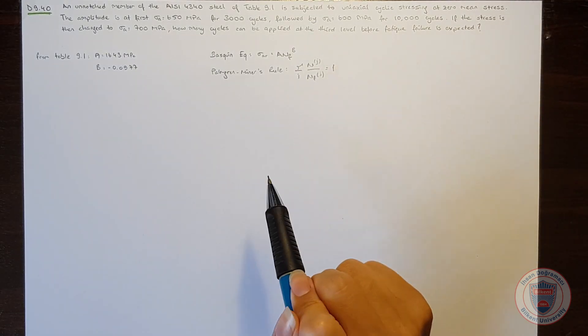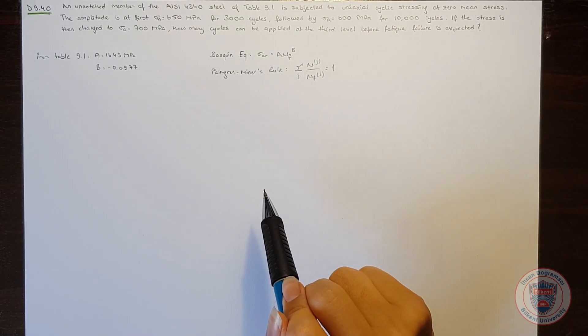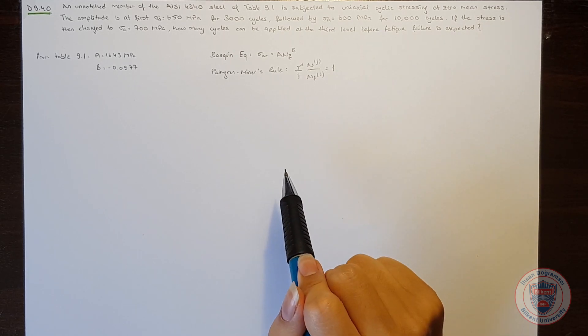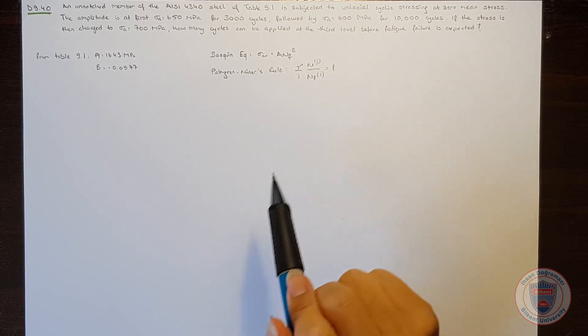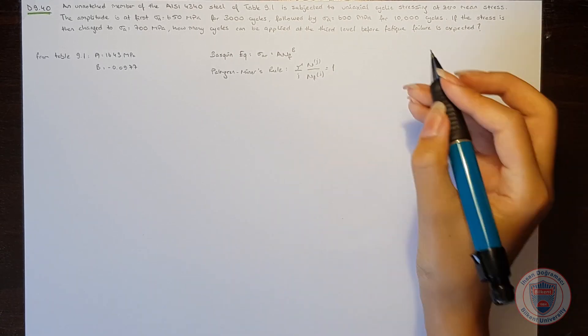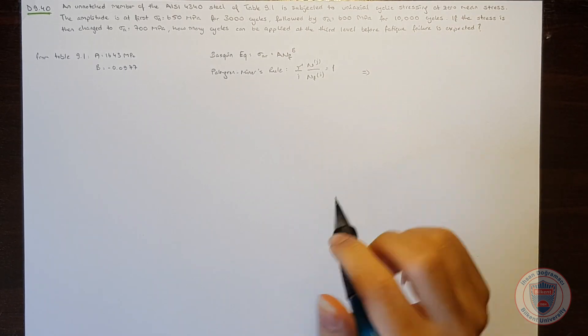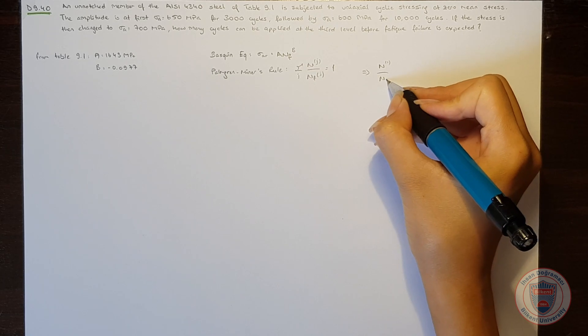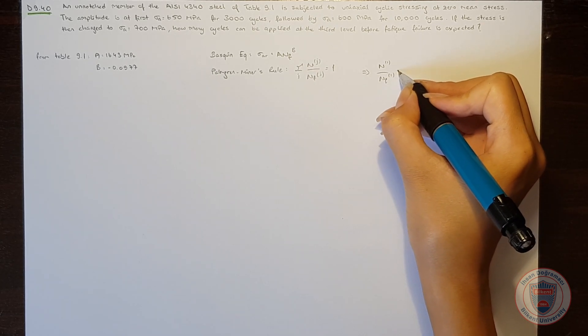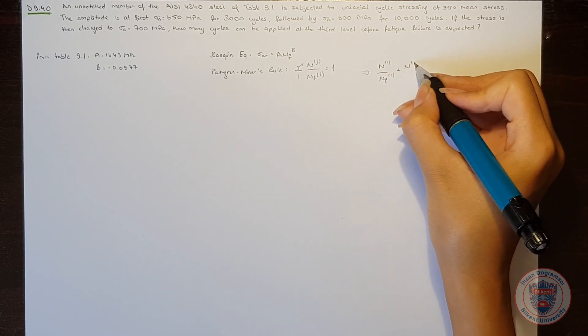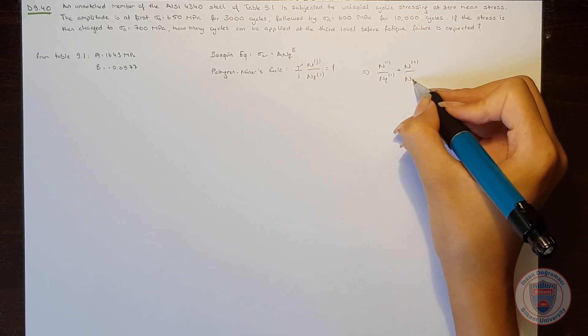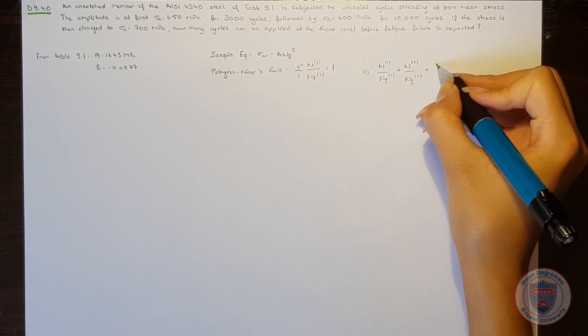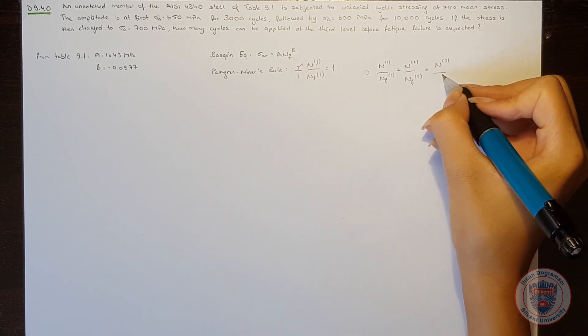The sum of the ratios of the cycles from 1 to j will be equal to 1. We will use this rule as the given equation.